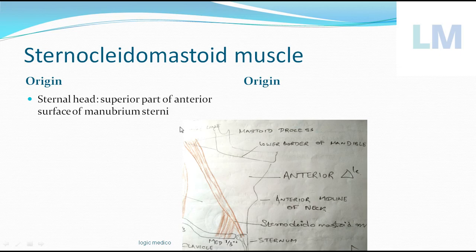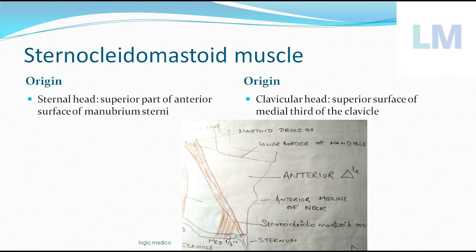Since this muscle is above the chest, it takes origin from the upper surface — the anterior and superior surface of the manubrium sterni. The clavicular head takes origin from the superior surface of the medial one-third of the clavicle. This is because the sternum is in the midline, so the origin should be from the medial one-third. Both heads then merge and travel upwards and backwards.